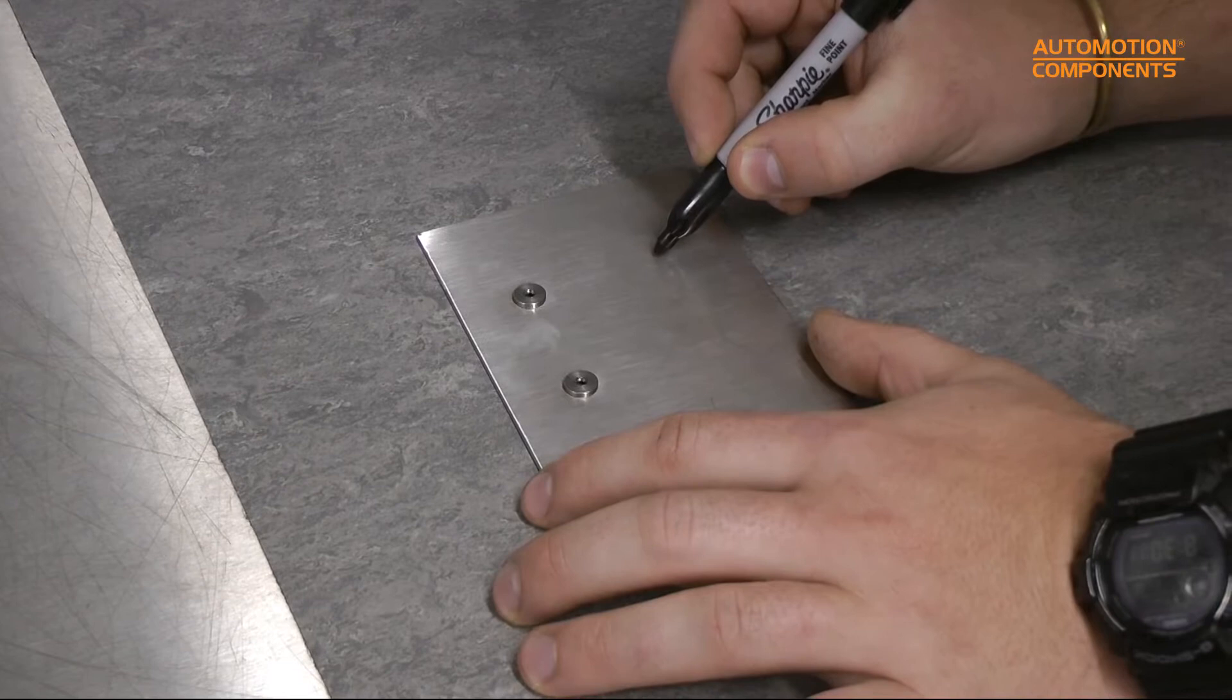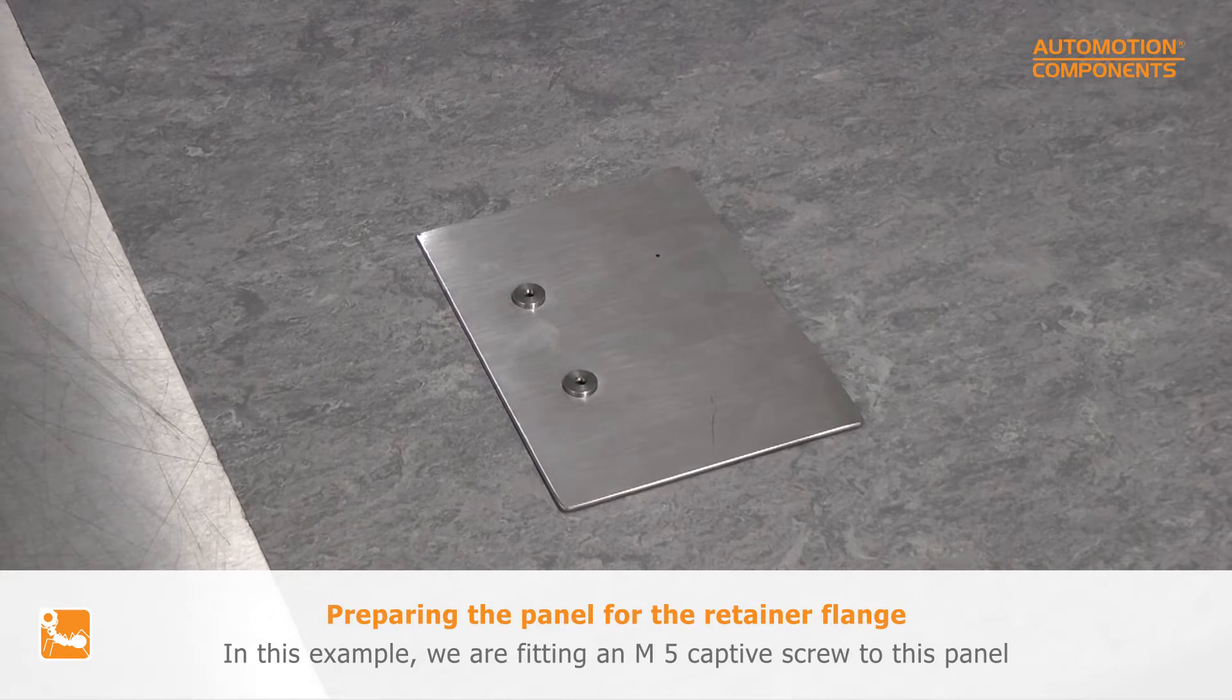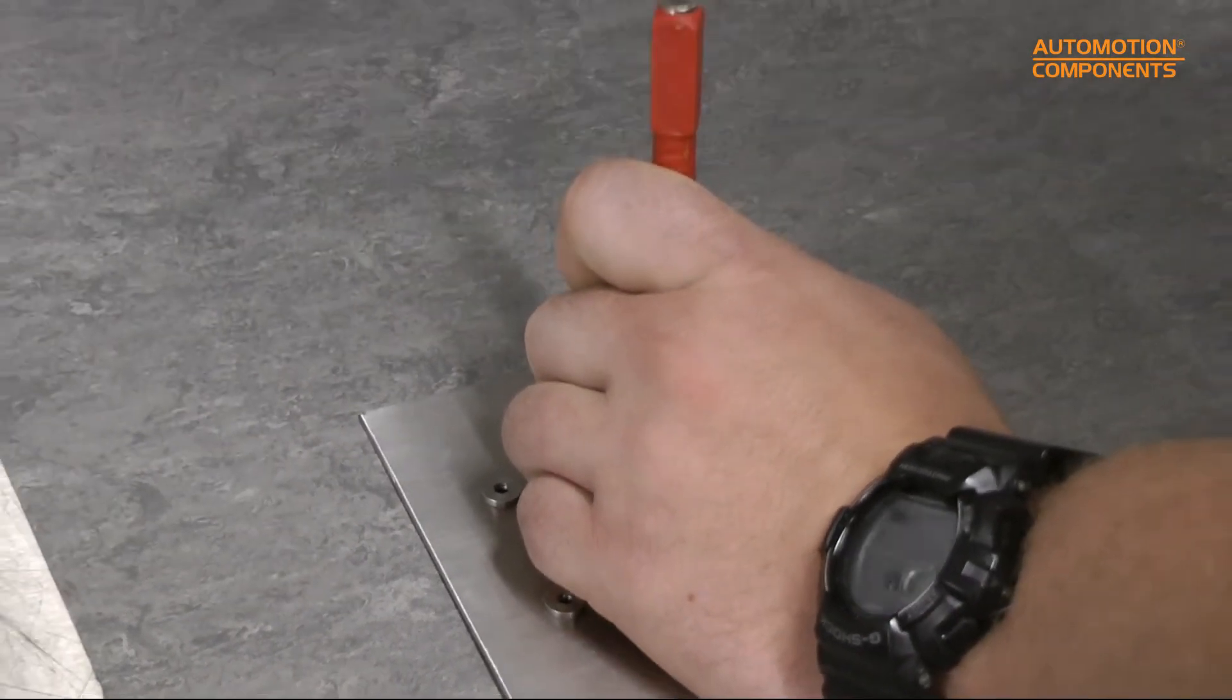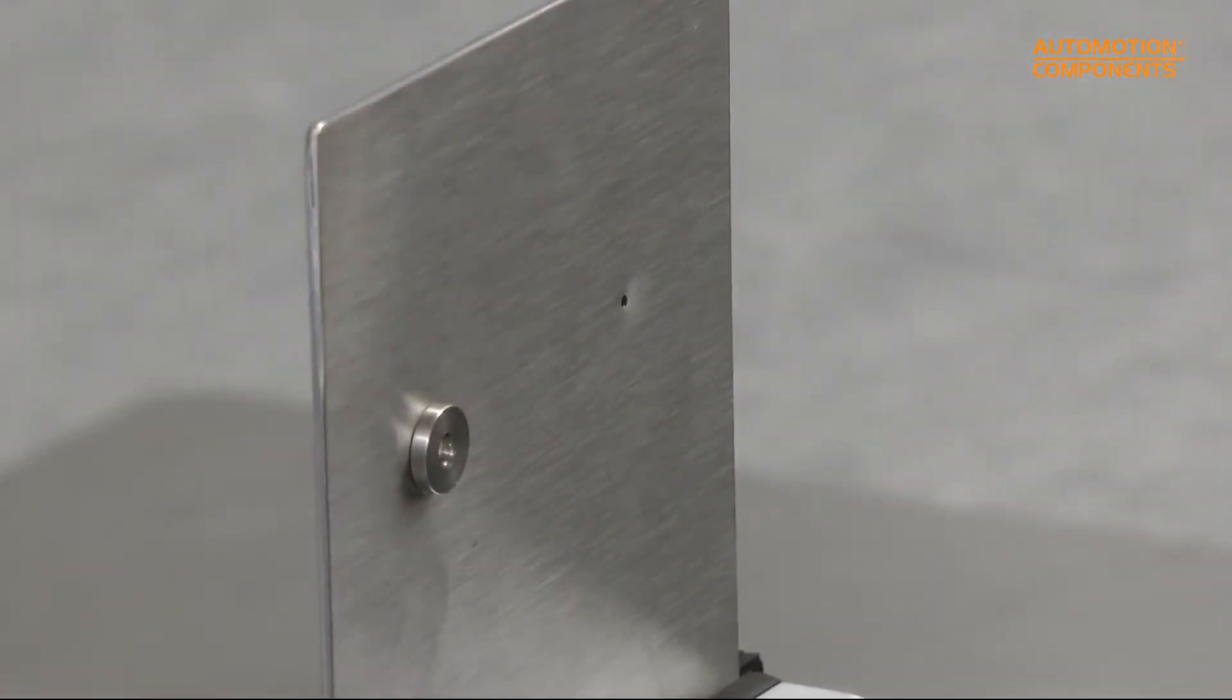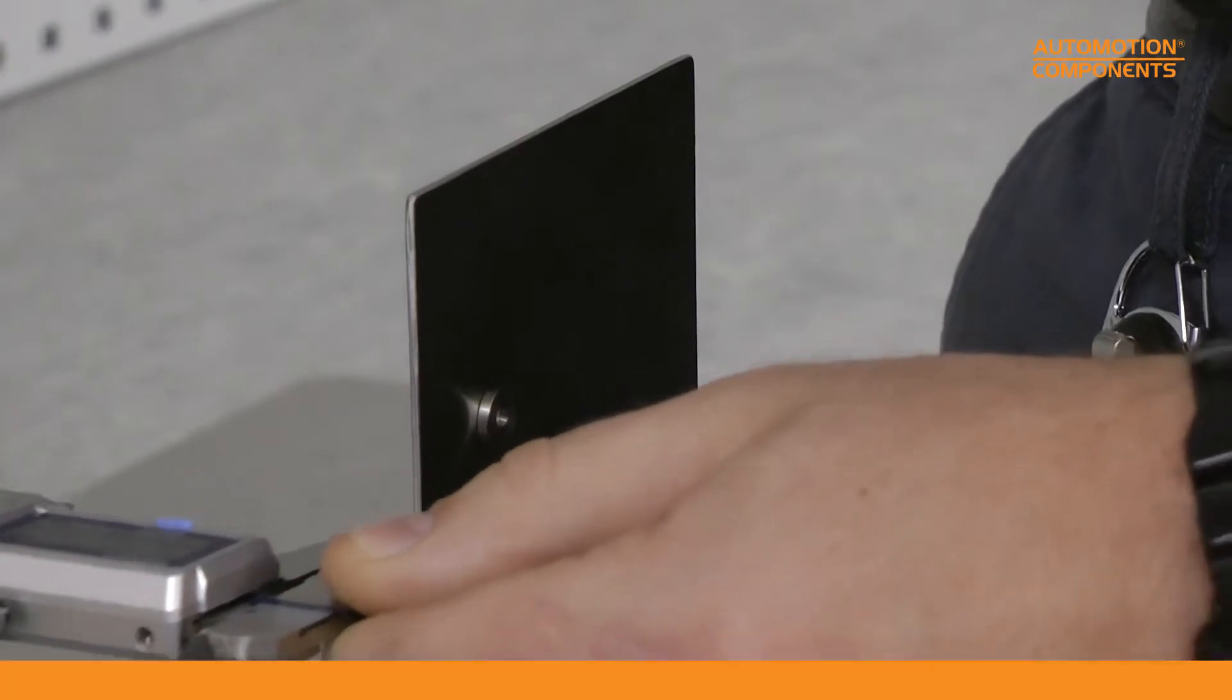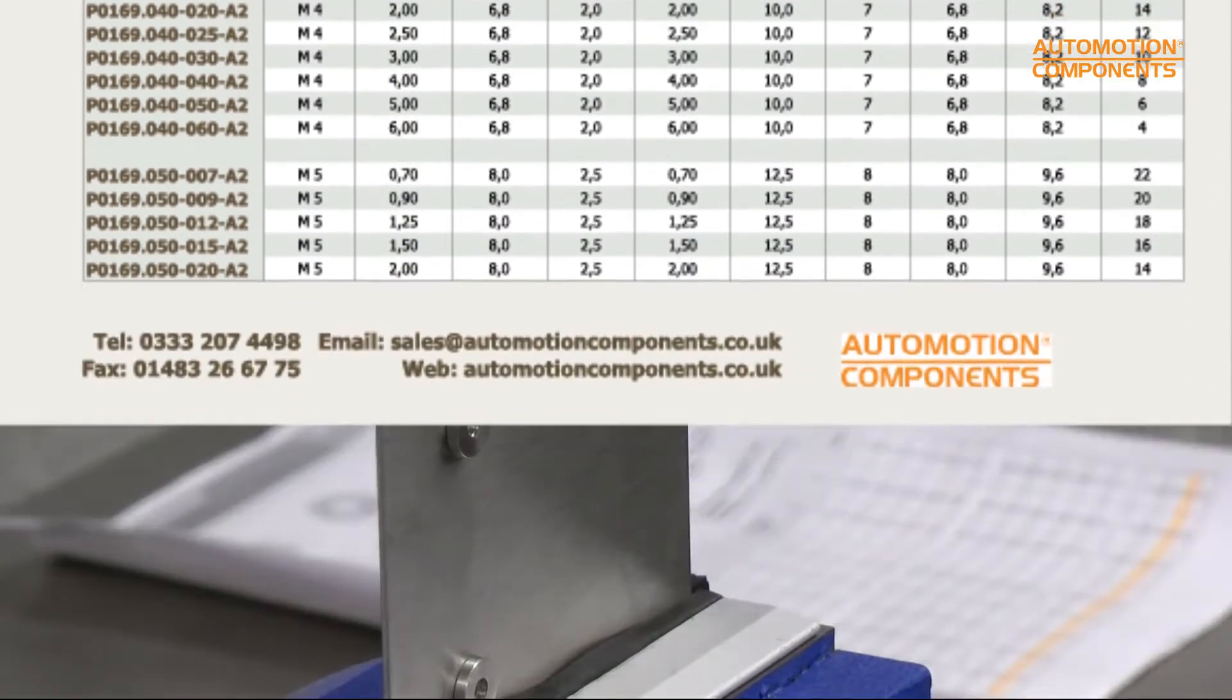So first I'm going to use a sharpie to mark the point. We're going to then go ahead and grab my hammer and mark that. I've therefore made an indentation. I'll use my vernier to find out what thickness plate I have. 1.5 on the vernier, so I therefore know that I need to use the specific retainer flange.